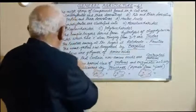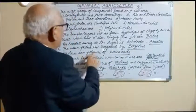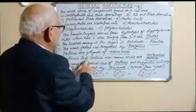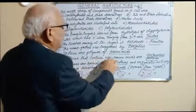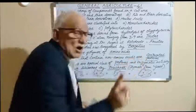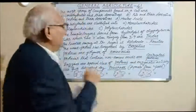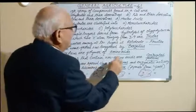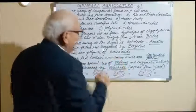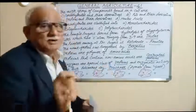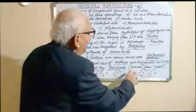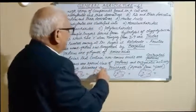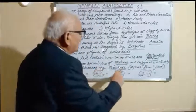The name protein was suggested by Berzelius. Proteins are polymers of amino acids. Proteins that contain non-amino acid components are called conjugated proteins. Enzymes are a special class of proteins, and enzymatic activity was first discovered by Buchner.